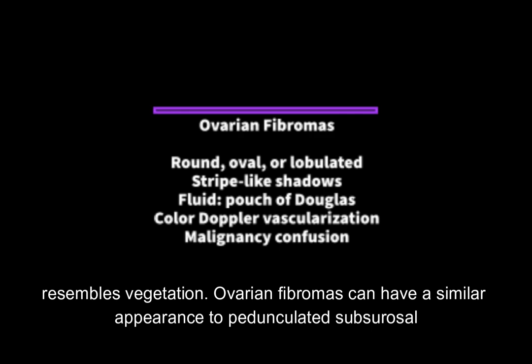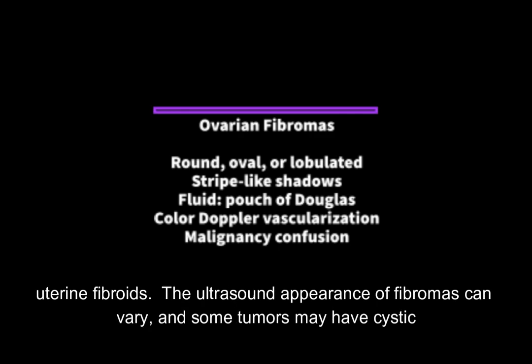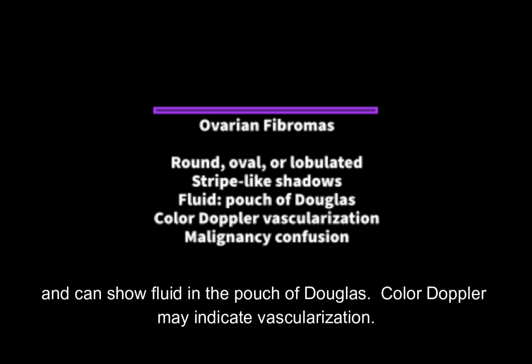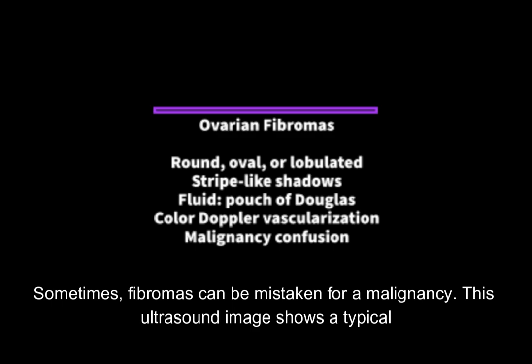Ovarian fibromas can have a similar appearance to pedunculated subserosal uterine fibroids. The ultrasound appearance of fibromas can vary, and some tumors may have cystic components. Fibromas can have a round, oval, or lobulated shape. They produce stripe-like shadows and can show fluid in the pouch of Douglas. Color Doppler may indicate vascularization. Sometimes fibromas can be mistaken for a malignancy.